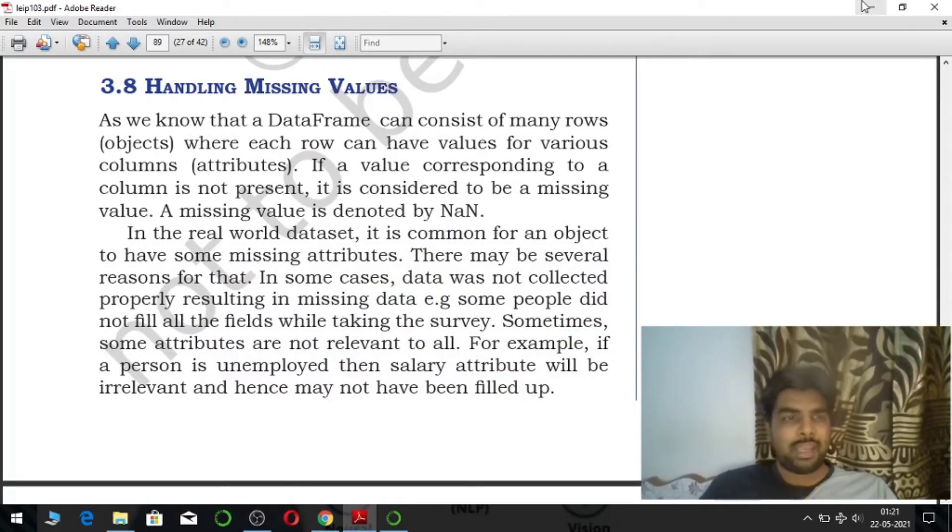As we know that a data frame can consist of many rows where each row can have values for various columns like attributes. If a value corresponding to a column is not present, it is considered to be a missing value. A missing value is denoted by NAN.